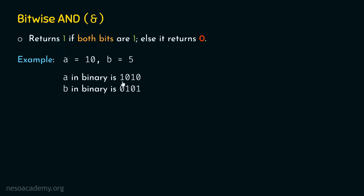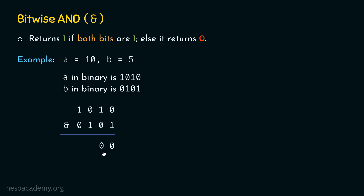We write the numbers aligned for the operation. 0 AND 1 returns 0, because bitwise AND returns 1 only if both bits are 1 — here both bits are not 1. 1 AND 0 also gives 0. 0 AND 1 gives 0. And the last pair also gives 0. So we get 0000, which is equal to 0 in decimal. Therefore, performing bitwise AND on 10 and 5 gives us 0 as the result.